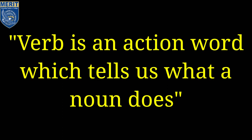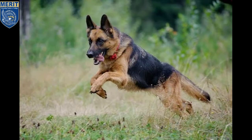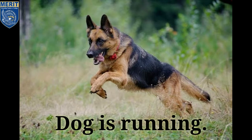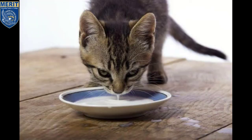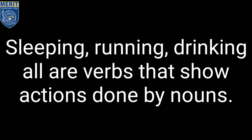For example, look at the pictures — what is the baby doing? Yes, the baby is sleeping. And the dog is running. The cat is drinking milk. So sleeping, yani sona; running, yani bhagna; and drinking, yani peena — these are all verbs which show actions.